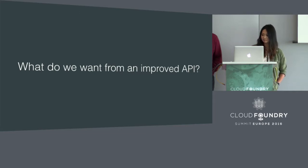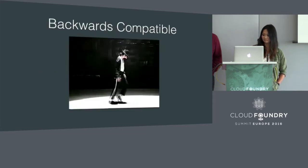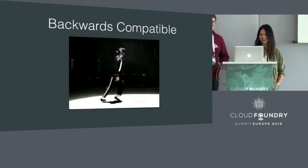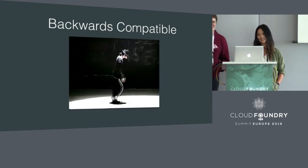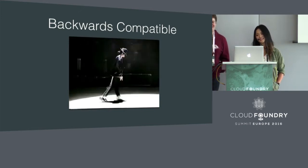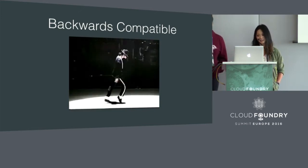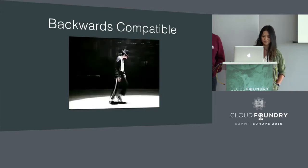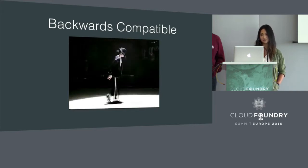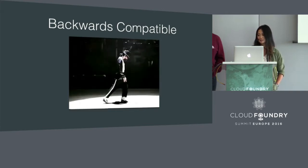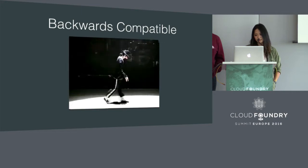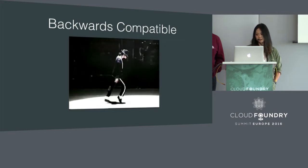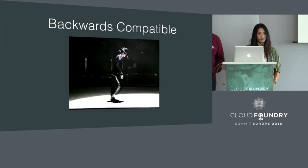So what were our goals? Backwards compatible. We want to maintain B2 behavior. Eventually, we will be deprecating B2, and new features will be added exclusively to B3. We know that there are a lot of tools out there, so we want to make sure that we don't break that experience.